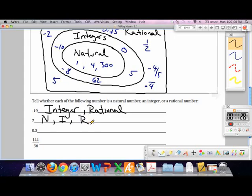How about 0.3? What type of number is 0.3? A rational number. Is it an integer? Why not? Because it's not a whole number. It's a decimal. It's not a whole number. So it's only a rational.